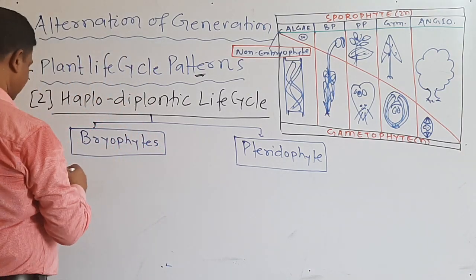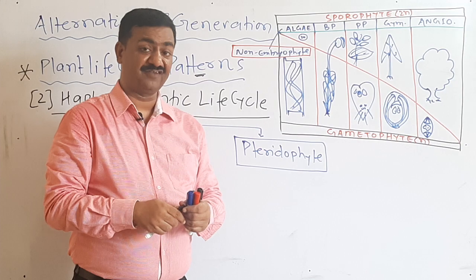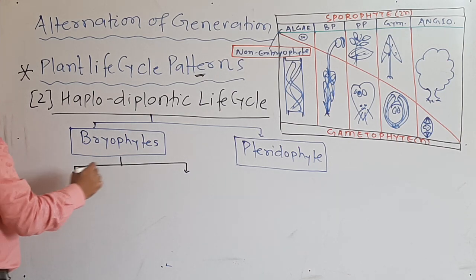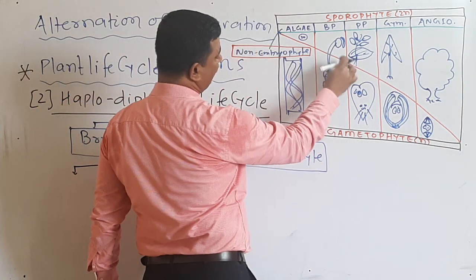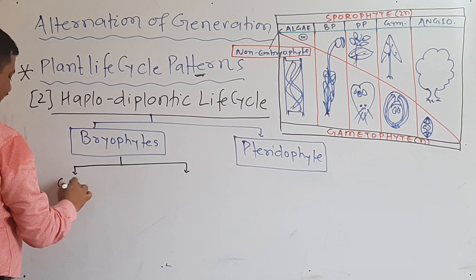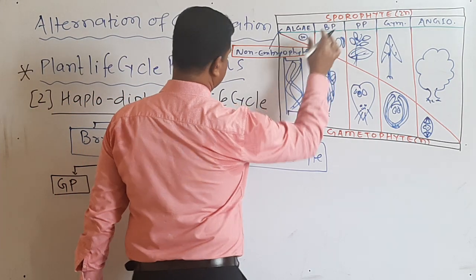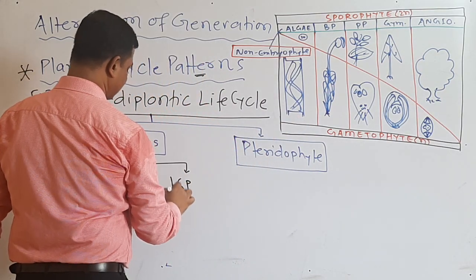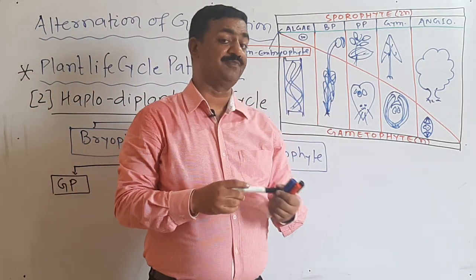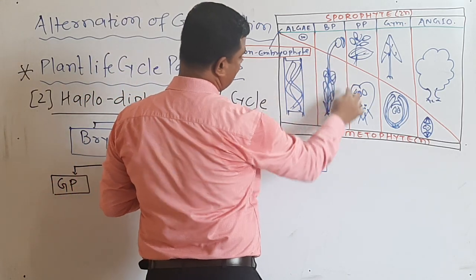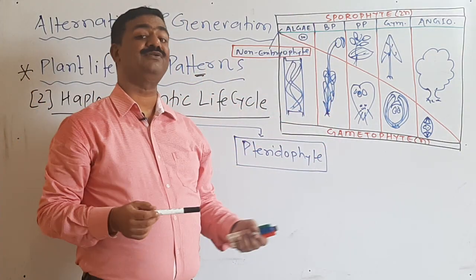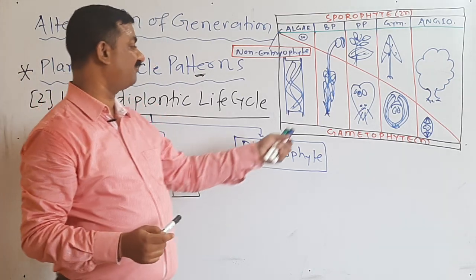In bryophytes we will distinguish their heteromorphic alternation of generation. The first structure is the gametophyte — the maximum body is of gametophyte. The second structure is the sporophyte. By the diagram you can easily find which one is dominant. The haploid gametophyte is more predominant — it is the leafy gametophyte. Question will come: first leafy gametophyte is found in bryophytes.